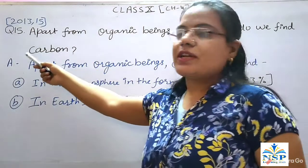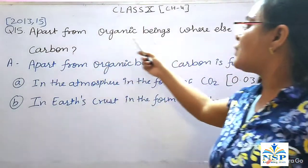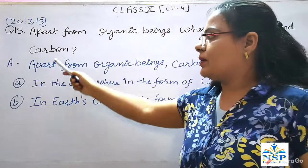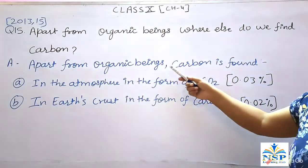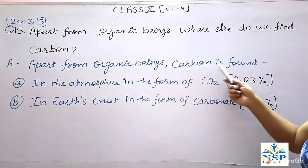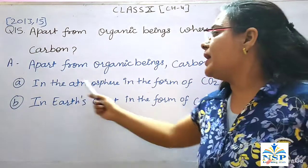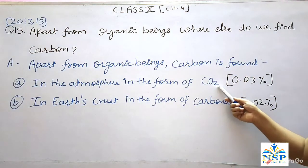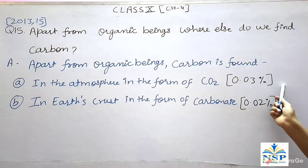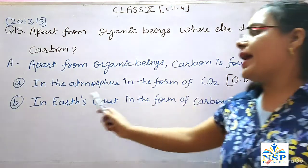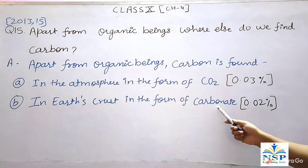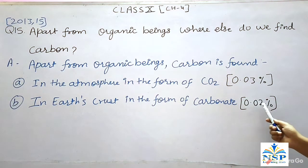Our next question: Apart from organic beings, where else do we find carbon? Apart from organic beings, carbon is found in the atmosphere in the form of carbon dioxide, which is 0.03% only, and in the earth's crust in the form of carbonates, which is also 0.02% only.